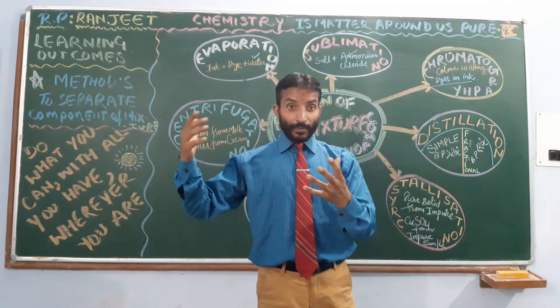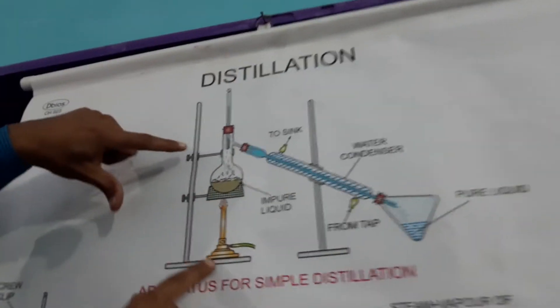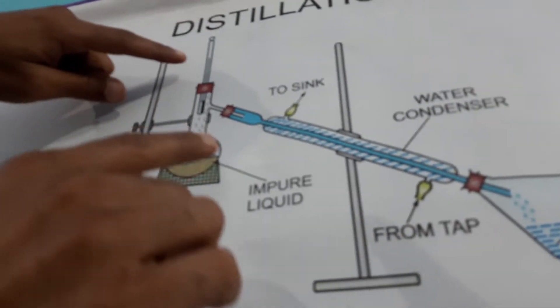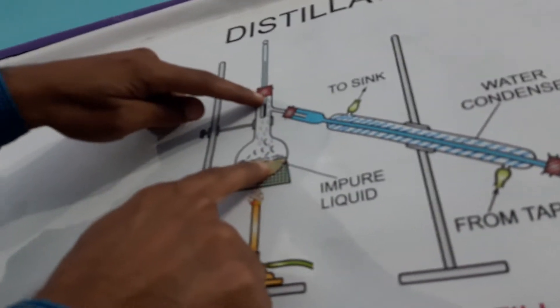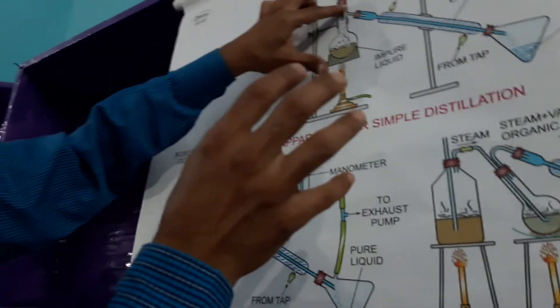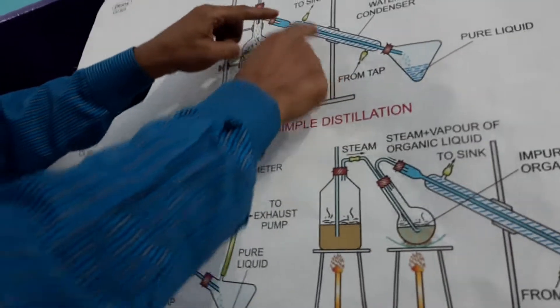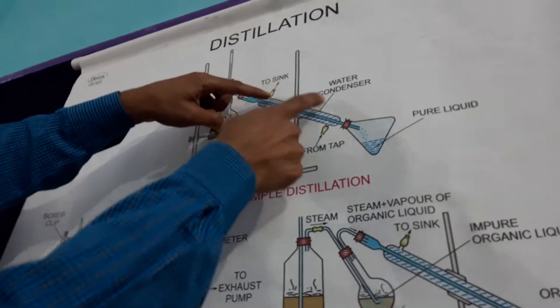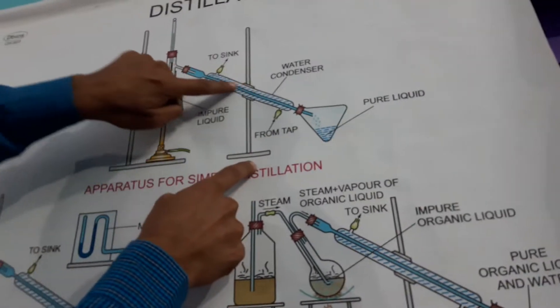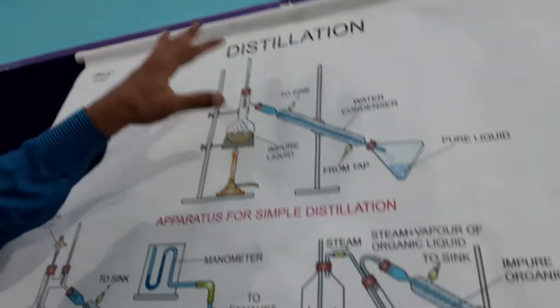Let us see this practically in a chart. Here is our simple distillation apparatus — this is your distillation flask, where you keep the mixture. When it is heated up, the component whose boiling point is reached will come in the form of vapor. Here the condenser is there — it will condense the vapor. Chilled water is passed through the condenser from sink to tap, going through the outer jacket. The vapors coming in get condensed, giving us pure liquid. This is simple distillation.